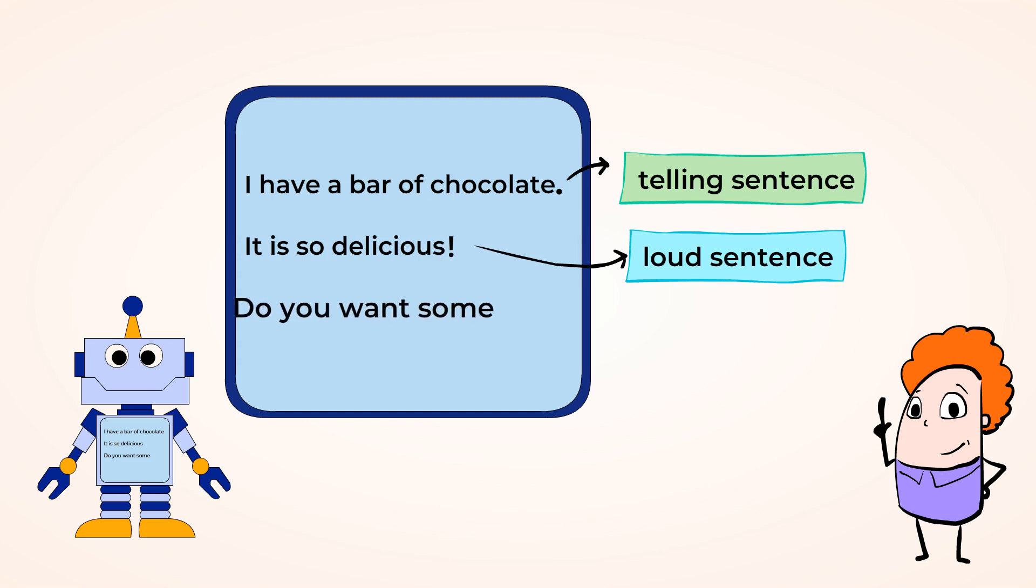And the last sentence is, do you want some? Now is that a commanding or an asking sentence? Well because the robot is asking for information, it's an asking sentence. So we need to put a question mark at the end of the sentence.